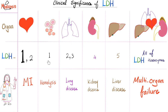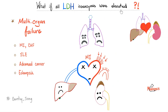Red blood cells have LDH1 — elevated LDH1 could signify hemolysis. Lungs have LDH2 and LDH3 — if elevated, this is lung disease. Kidneys have LDH4 — if LDH4 is elevated, this may be kidney disease. Liver has LDH5 — elevated LDH5 suggests liver disease. If all LDH isoenzymes are elevated, this is multi-organ failure — such as MI with CHF, lupus, advanced cancer, preeclampsia, or eclampsia.